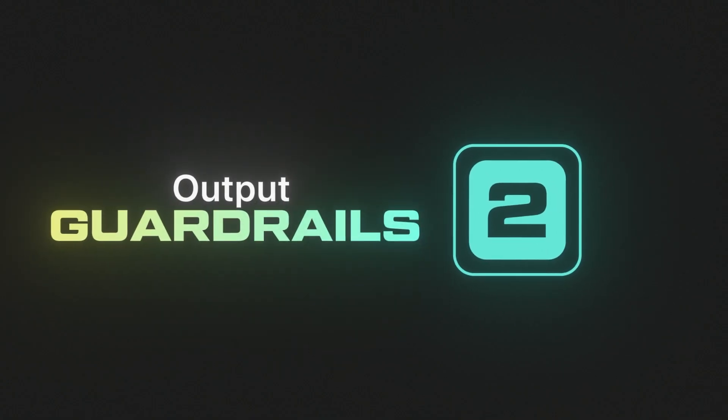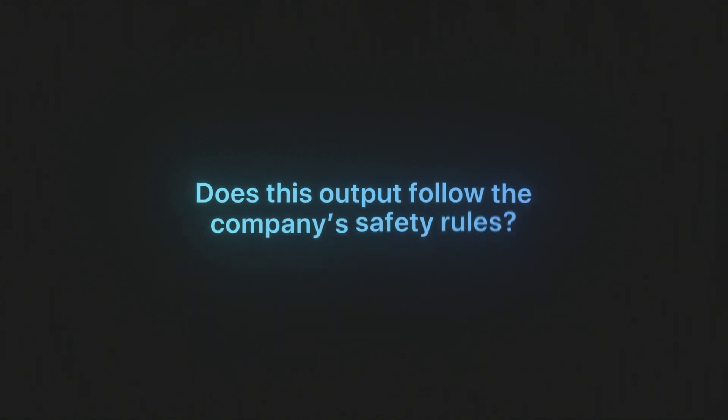Number two: output guardrails. These are the checks that you run after the AI generates its response. Anthropic and NVIDIA both highlight using modular prompts for this — like a second fact-checker or policy enforcer prompt that reviews the AI's output. For example, you might pass every answer through a follow-up prompt that simply asks: 'Does this output follow our company's safety rules?' And if it doesn't, it's going to get flagged.